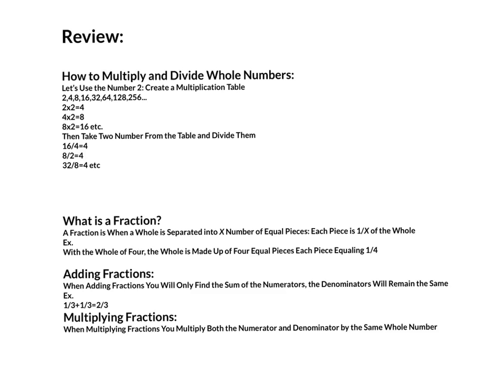But let's move on to division. You can take any two numbers from that multiplication table. I took 16 and 4 and got 4, that is because there are 4 4's in 16, if that makes any sense. So if you take 4 plus 4 plus 4 plus 4, you'll get 16.